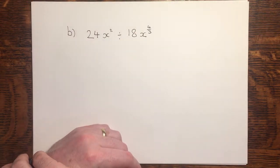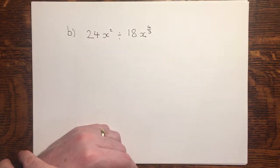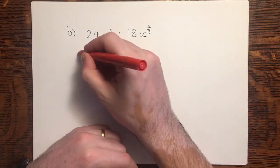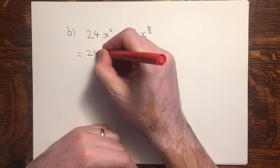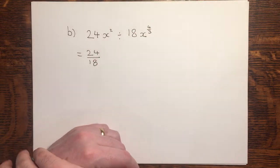Now, at this point, we need to deal with coefficients and with indices. Coefficients are normal numbers, so we simply divide them in the normal way. 24 divide by 18. I've shown that in the fractional form of division.